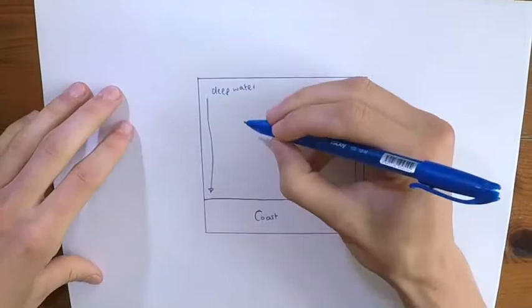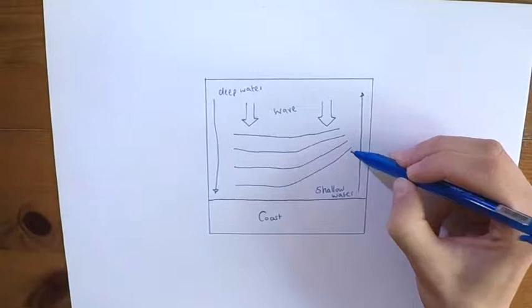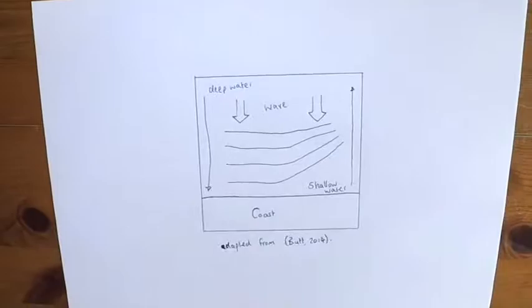When a wave front travels at different speeds over water of different depths, it refracts. This is the bending of the wave front. When part of a wave moves slower than another, the wave bends towards the slower part of the wave. The wave always bends towards shallow water as this is where the wave travels most slowly. To calculate the amount of refraction, you can use Snell's law.